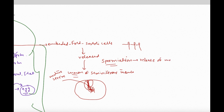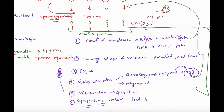Spermiation is the release of mature sperms from Sertoli cells into the lumen of the seminiferous tubule. The mature sperm are haploid, have a tail, and are motile, with a structure consisting of head, midpiece, and tail.